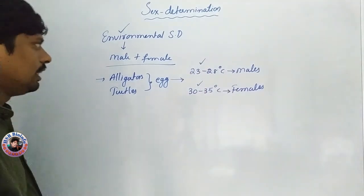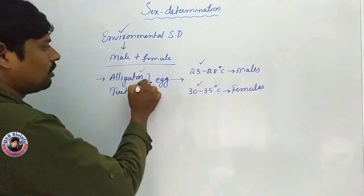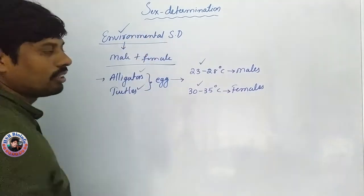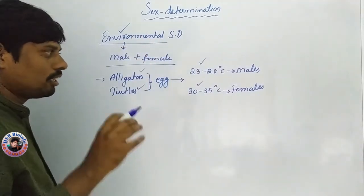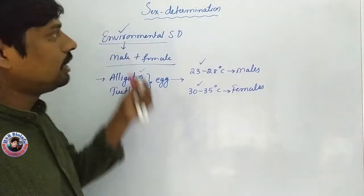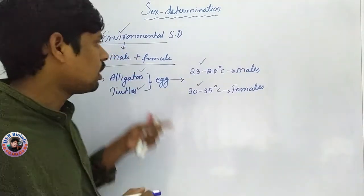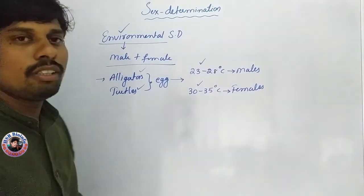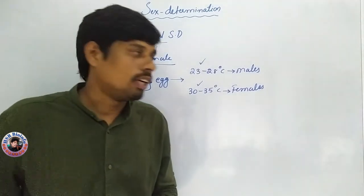Females temperature - this is environment, especially temperature that determines the sex of alligators. Scientists - this is environmental-based sex determination. I hope this is clear.